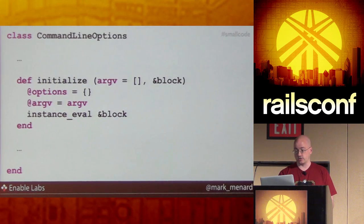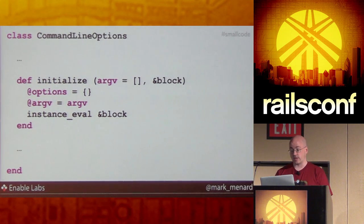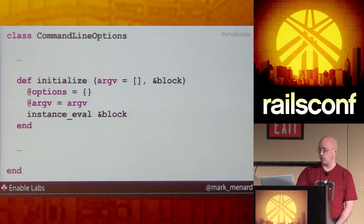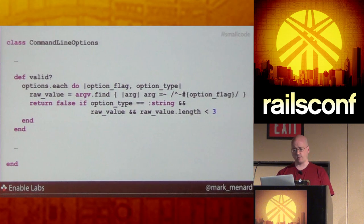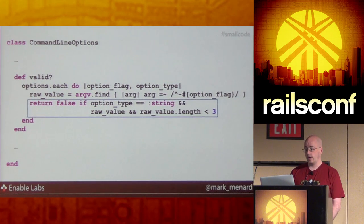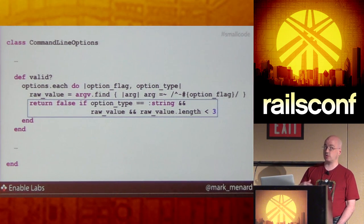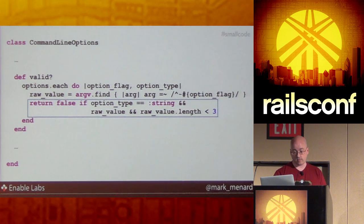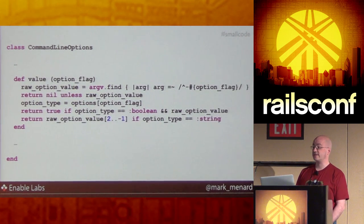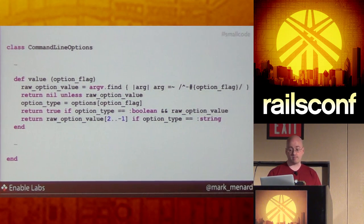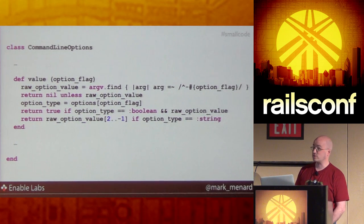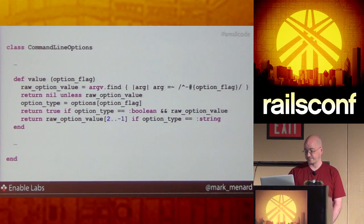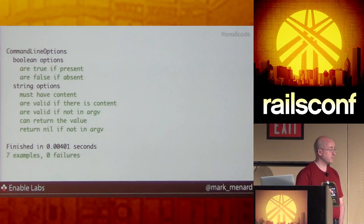Let's look at the pieces. The initialize method creates a hash to store the options because we have to store the type now — either Boolean or string. In the valid method, we iterate over the options looking to see which ones are strings, checking their type and whether they're present and have content. Boolean options have nothing really to validate, but strings we have to. The value method does a lot of stuff — it's by far the worst code in this current example. But everything is spec'd, and all my specs are green.